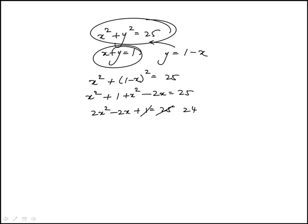Subtract 1 from both sides, that's 24. Divide both sides by 2. It becomes that, and that's our familiar quadratic. We can factor this.